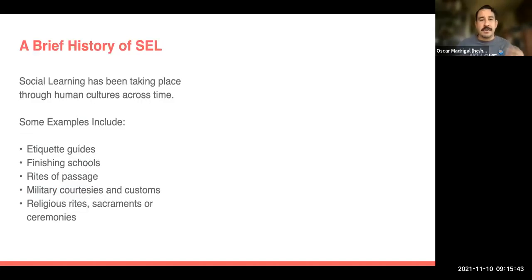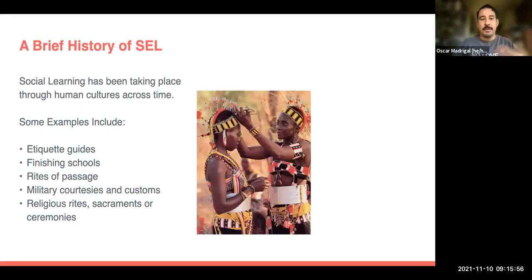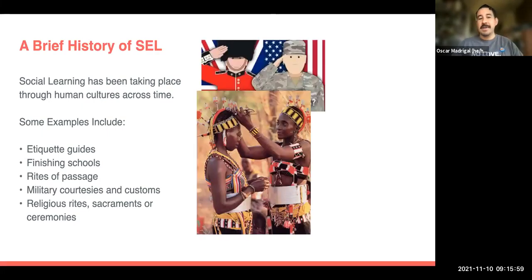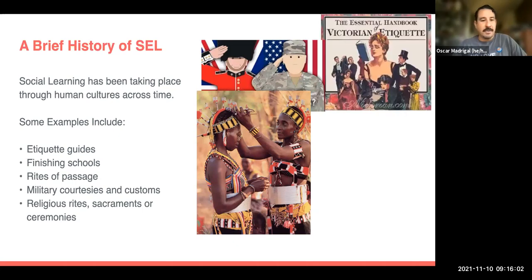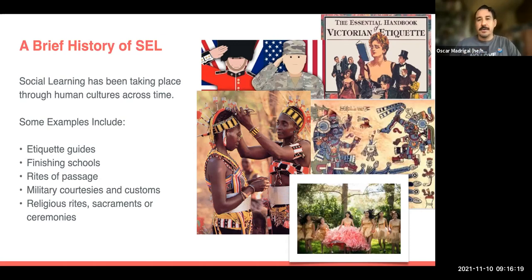I wanted to give a brief history of SEL. We've been having social learning for millennia across different cultures — things like etiquette guides, rites of passage, military courtesies and customs, religious rites, sacraments, or ceremonies. All of these are parts of social learning taking place across different cultures. They represent a group of people with a common understanding of what social things a child or individual needs to learn to be part of that culture.